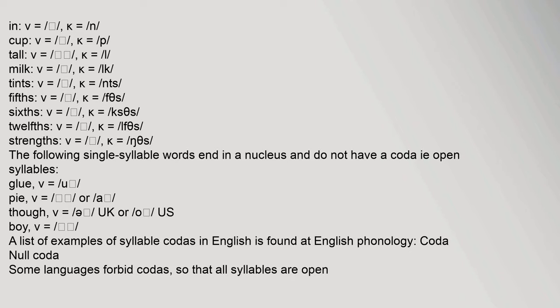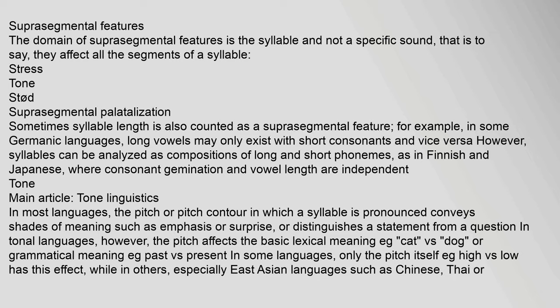Some languages forbid codas, so that all syllables are open. The domain of suprasegmental features is the syllable and not a specific sound — they affect all the segments of a syllable. Suprasegmental features include stress, tone, stød, and palatalization. Sometimes syllable length is also counted as a suprasegmental feature. For example, in some Germanic languages, long vowels may only exist with short consonants and vice versa.